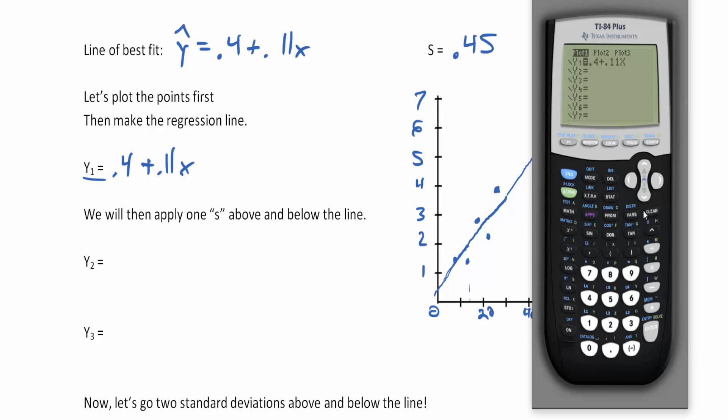I really have to explain what the s stands for. It's one standard deviation away vertically off of the line. I'm going to move to list two and type in 0.4 plus 0.11x plus 0.45, so I'm going to have a line that's parallel to it above it.